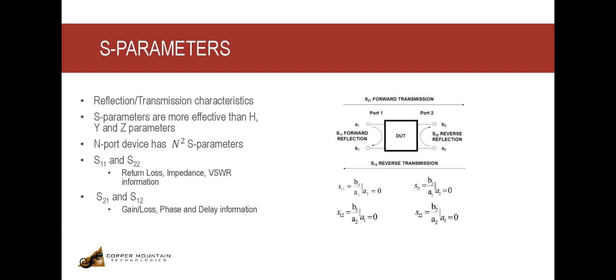So, as a general rule, an n-port device has n² S-parameters. For example, a 2-port VNA would give you up to 4 S-parameters: S11, S21, S12, and S22.